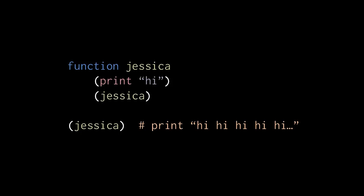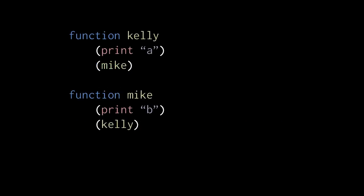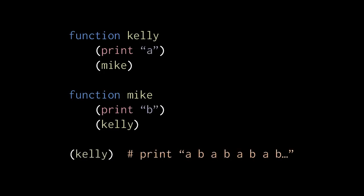Jessica is an example of direct recursion, but it's also possible to have indirect recursion. Here we have a function kelly which prints a and then invokes mike, and a function mike which prints b and then invokes kelly. So what happens when we invoke kelly is that it prints a and invokes mike, and the invocation of mike prints b and then invokes kelly, thus perpetuating an endless cycle. Both kelly and mike are indirectly recursive, because an invocation of kelly will indirectly result in more invocations of kelly, and an invocation of mike will indirectly result in more invocations of mike.